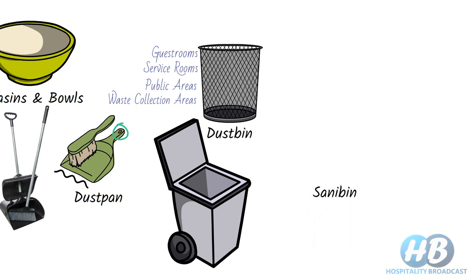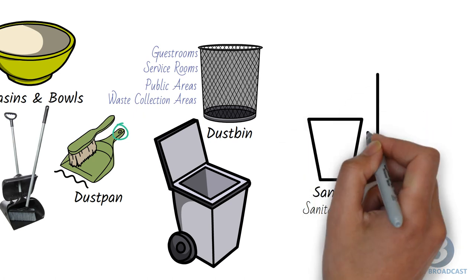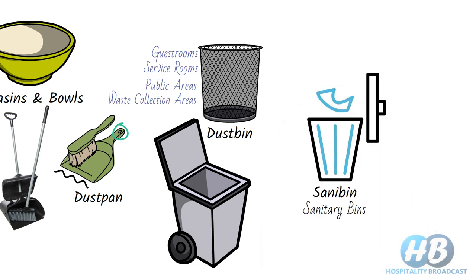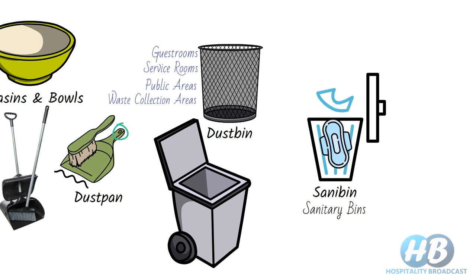Sanitary bins are generally placed in toilet or washroom areas. It is preferred to buy a sanitary bin with a lid, as these are used for hygienically disposing of feminine waste products and other wastes which are not suitable for flushing down a toilet or disposal in other traditional ways.